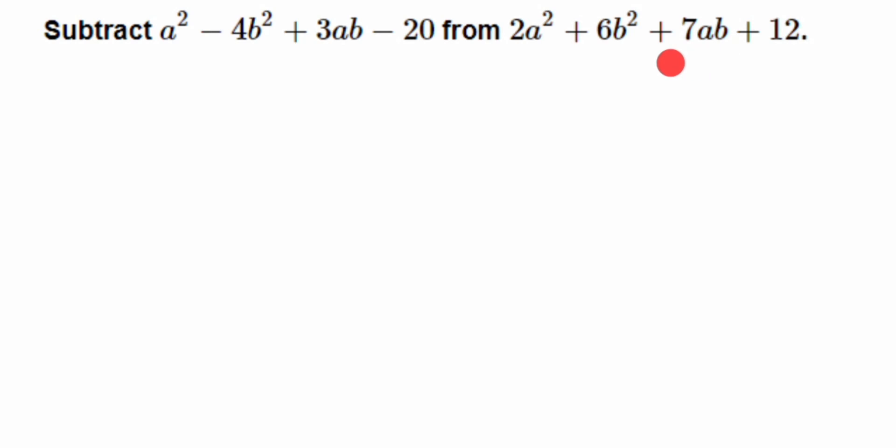So first we're going to write down the second expression and minus the first one. Here I'm going to do the column method or the vertical method. I'm going to write down the second expression first.